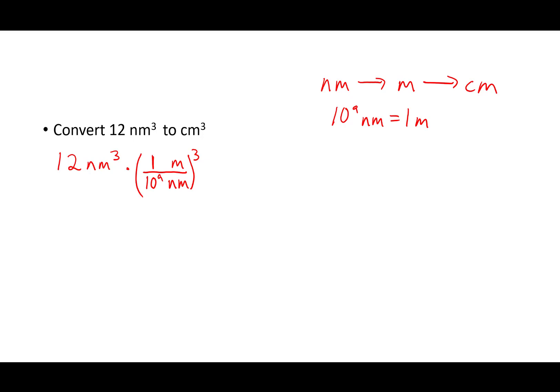Next up, we're going to go from meters to centimeters. I need to know my centimeter to meter conversion: there are 10 to the 2 centimeters in one meter. So let's start with our linear conversion factor — linear as in one-dimensional length. I'm going to want to cancel out the meters up top, so meters is going to have to be down below and centimeters will be left up top. There are 10 to the 2 centimeters in one meter — 100 centimeters in a meter. However, we won't be able to cancel out our meters cubed with just a meter, so we need to cube our whole conversion factor.